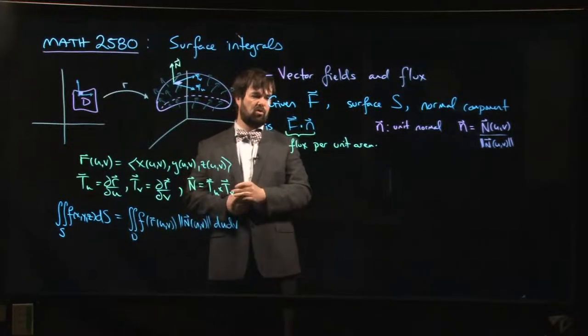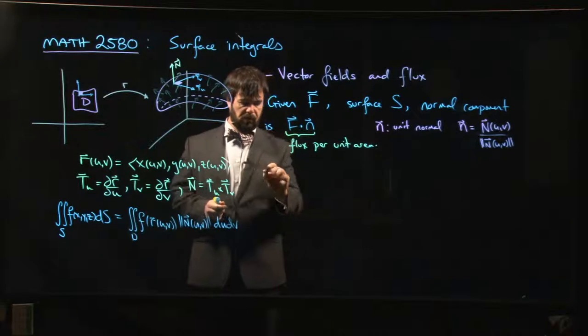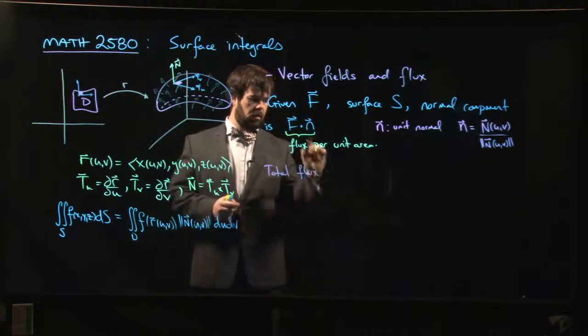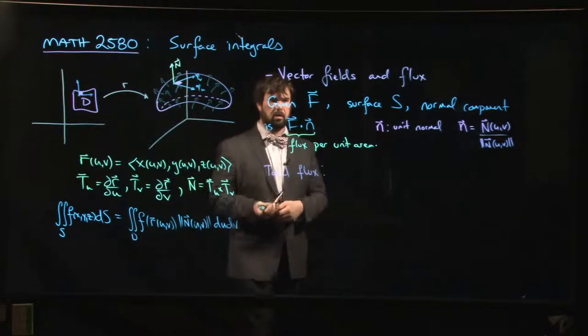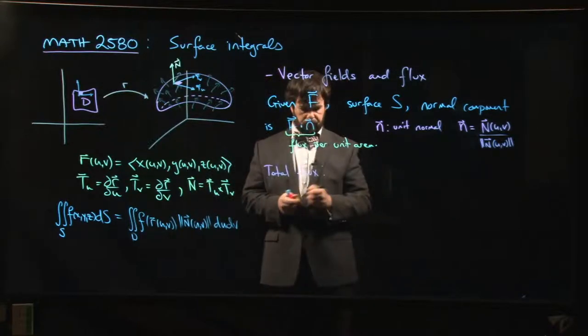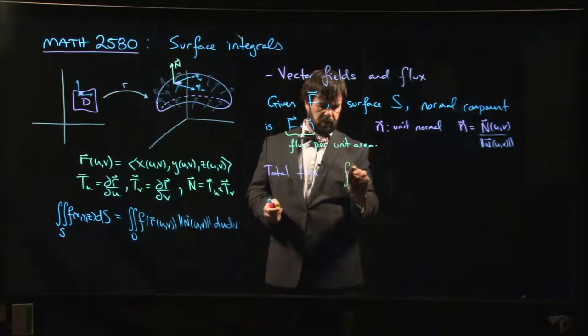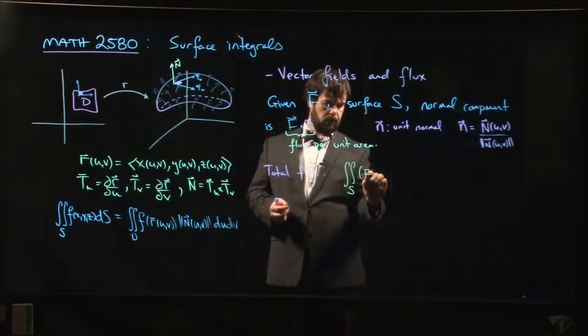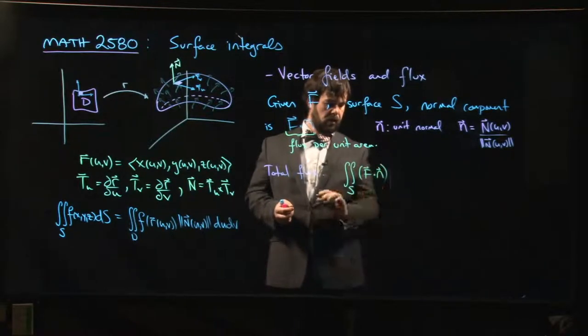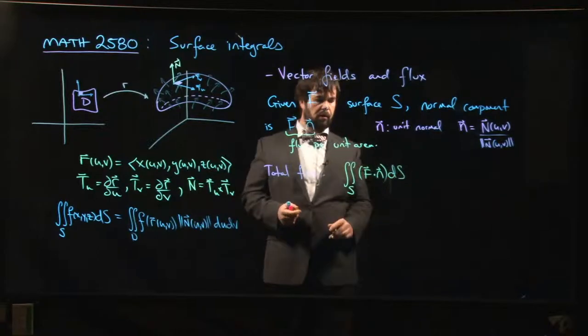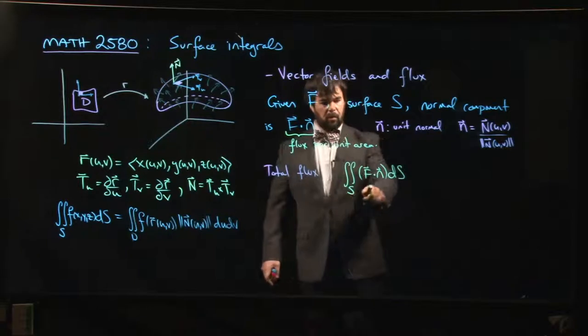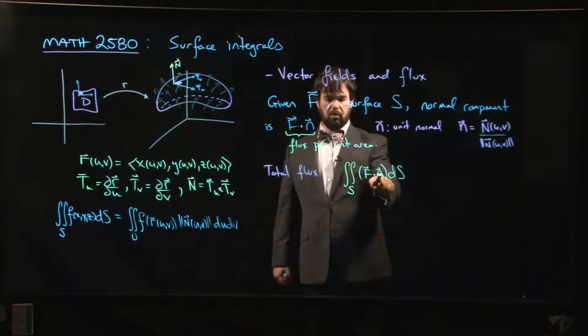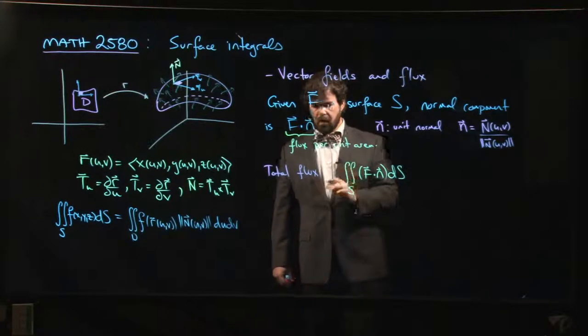Once you've made these identifications and choices, you can compute the total flux. The total flux is just what you get when you integrate: the integral over S of F dot n, and we integrate with respect to surface area. The dependence on orientation is buried in the normal vector.